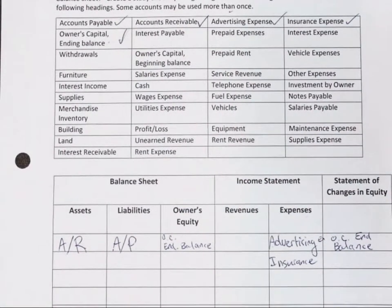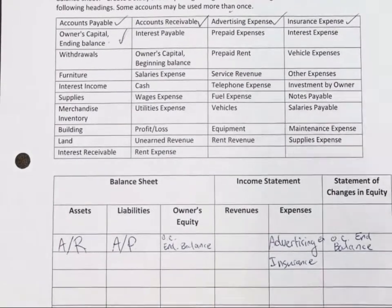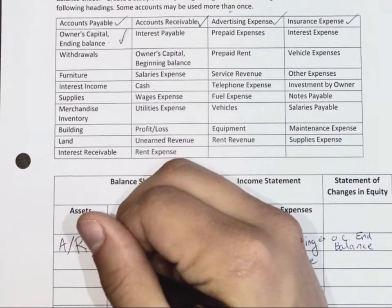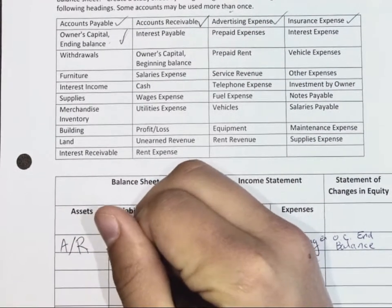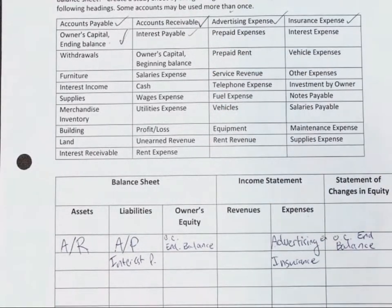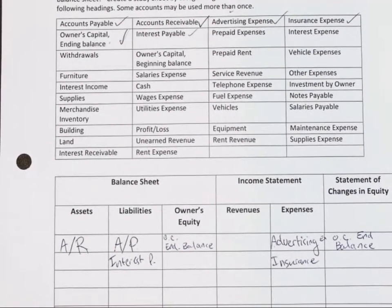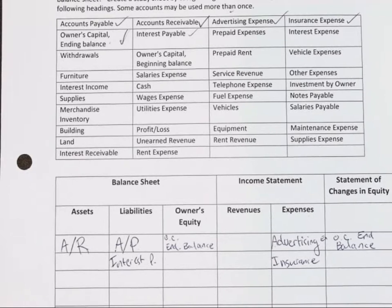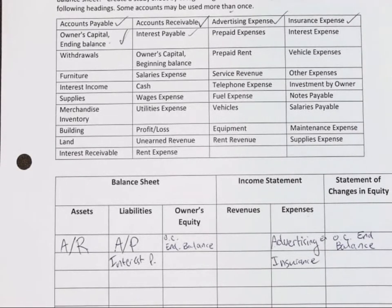Interest payable — anytime you see payable it's a liability. Prepaid expenses — not revenue, it's an asset.